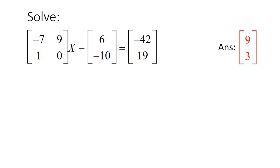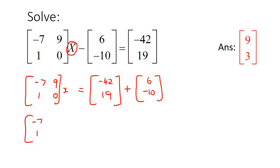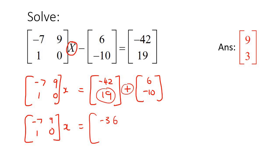Here's our last example. We're trying to get x by itself, but this is just a negative matrix on the right side. So you can actually just take that matrix over to the other side and combine it with the other one. So we now end up with negative 42, 19 plus 6, negative 10. These are just going to combine normally: negative 42 plus 6 is negative 36, and 19 plus negative 10 is 9.